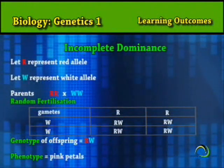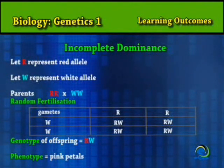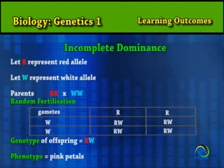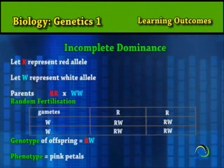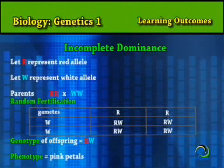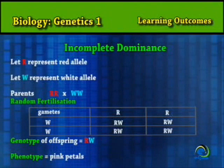Incomplete Dominance: Not all alternative alleles are fully dominant or recessive in heterozygotes. Sometimes heterozygous individuals do not resemble one parent precisely. Some pairs of alleles produce instead a heterozygous phenotype that is intermediate between the parents — in other words, blending occurs with the alleles.